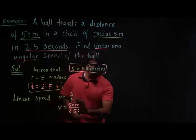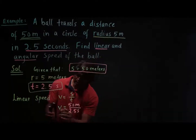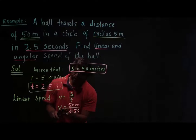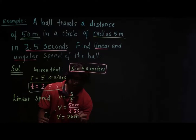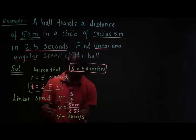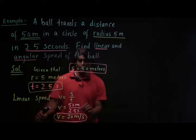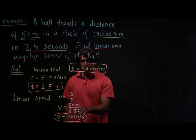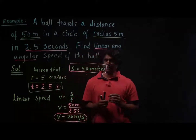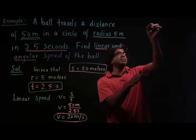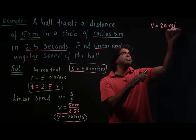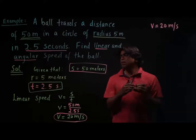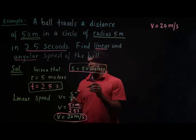Dividing 50 by 2.5, we get the linear speed as 20 meters per second. So my linear speed is 20 meters per second, and my radius is 5 meters.